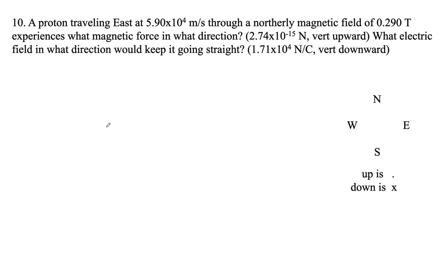A proton is traveling east, to the right on our page here, as we look at this map. In a northerly magnetic field, so this is our velocity, here is our magnetic field.